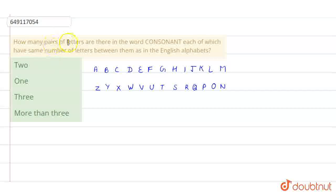Hello students, the question is how many pairs of letters are there in the word consonant, each of which have the same number of letters between them as in English alphabet. So, here we have the word, consonant.